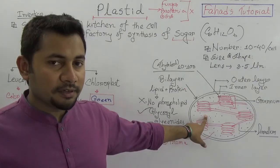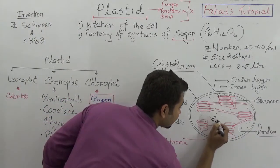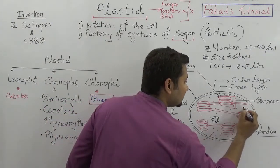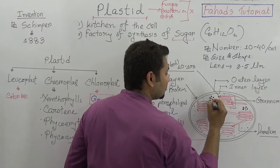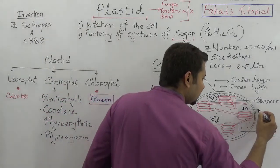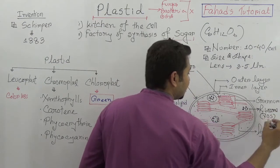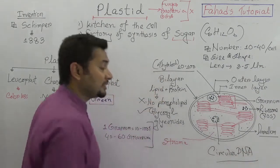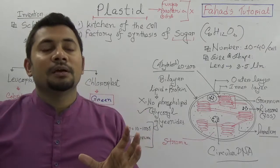Inside the plastid there will also be circular DNA and ribosomes. These ribosomes are involved in the synthesis and storage of protein. The ribosomes inside the plastid are of the 70S type. Circular DNA can also be present in the plastid.